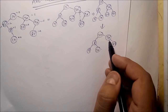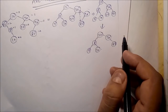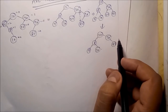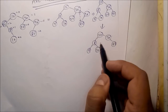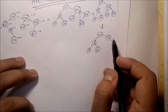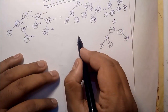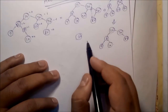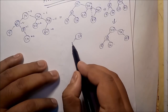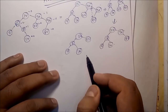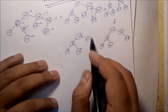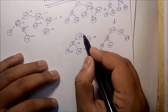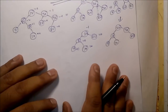Now suppose you want to delete 22. The successor of 22 is 33. So replace 22 with 33. After replacement, the tree is: 30, 8, 82. Checking if it is balanced — 0, 0, 0, 0, 1, 2, 1 — so it is minus 1. It is still AVL-balanced.